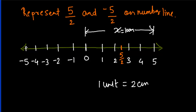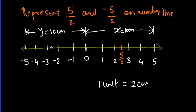In the same way for minus 5/2, the scale remains the same for this part too. The distance from 0 to minus 5 is also y, which will also be 10 cm. Dividing by 2 gives the corresponding point, which will be minus 5/2.